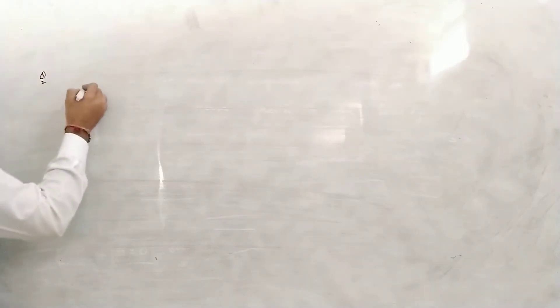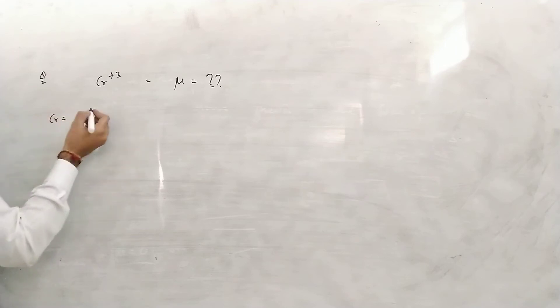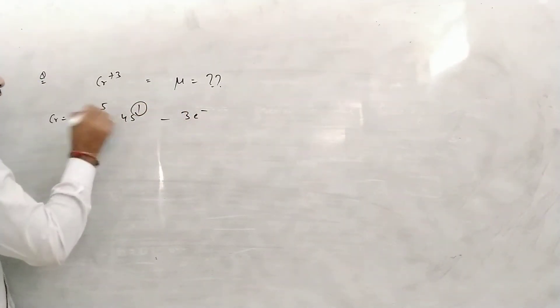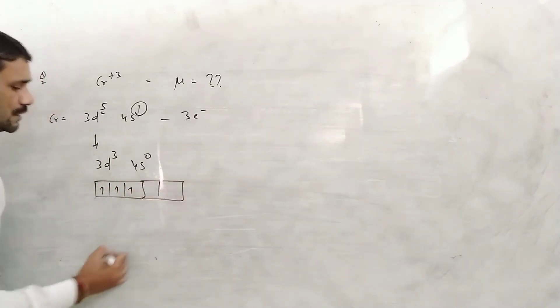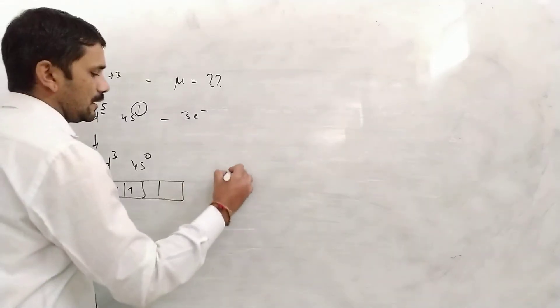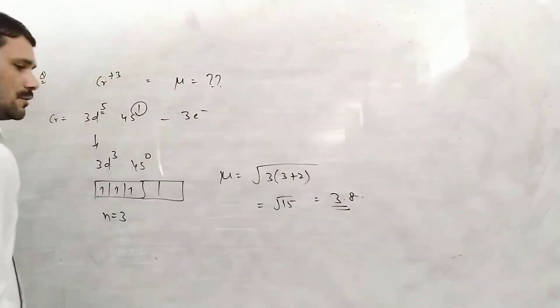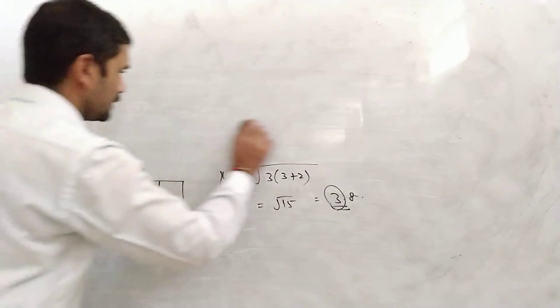Substances with no unpaired electrons and zero magnetic moment are weakly repelled in the external magnetic field and are called diamagnetic substances. This is the magnetic property of d-block elements. You can also calculate the magnetic moment of ions; for example, Cr3+ has atomic number 24, configuration 3d5 4s1, and after removing 3 electrons becomes 3d3 4s0, giving n=3, so μ = √(3×5) = √15 ≈ 3.87 BM.